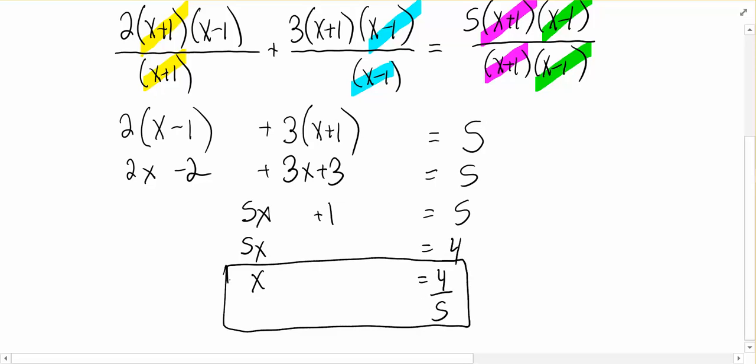4 fifths was not one of my disallowed values. So remember, I wasn't allowed to have 1, I wasn't allowed to have negative 1. And so my answer actually is 4 fifths and it works.